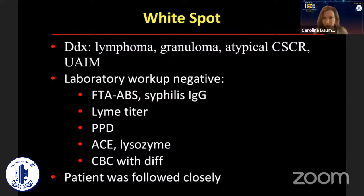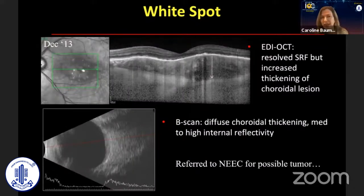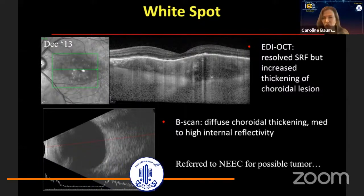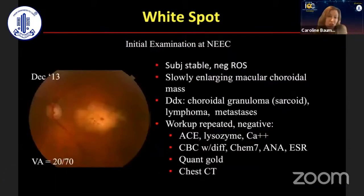The patient was followed closely by their outside physician, but the patient was sent back because the lesion started to grow. The vision was stable, but the lesion started to get larger. On the OCT at this time, we have a better image and we can see the back of the lesion. The subretinal fluid has gone, but we can see the thickness, and the B-scan showed some diffuse choroidal thickening. Does anyone think this is scleritis? Maybe a little atypical, but the nerve was hot. So this patient was followed for the slowly enlarging macular choroidal mass.